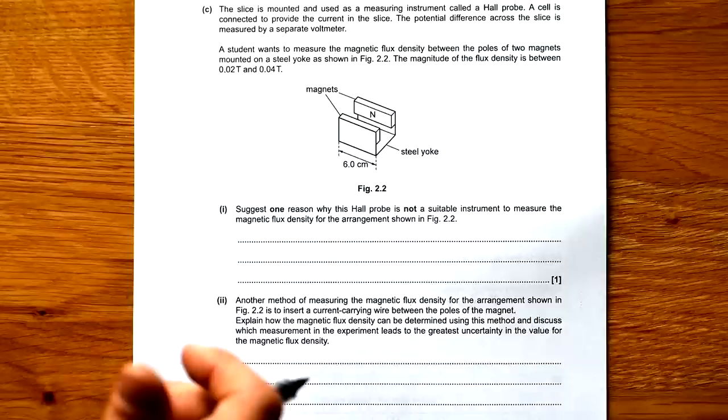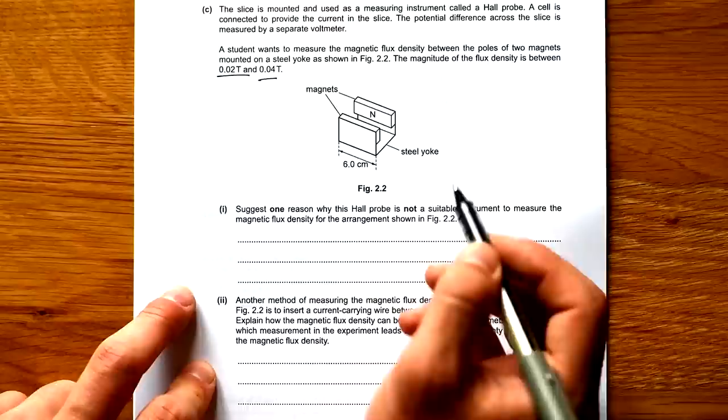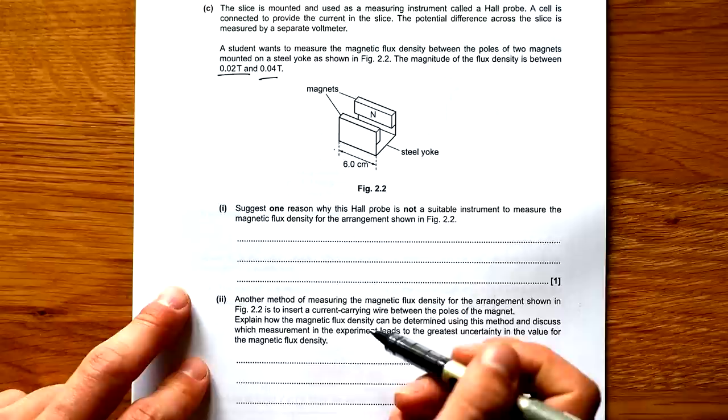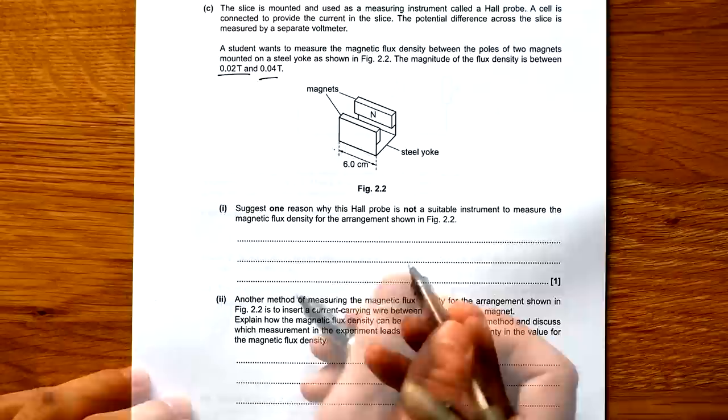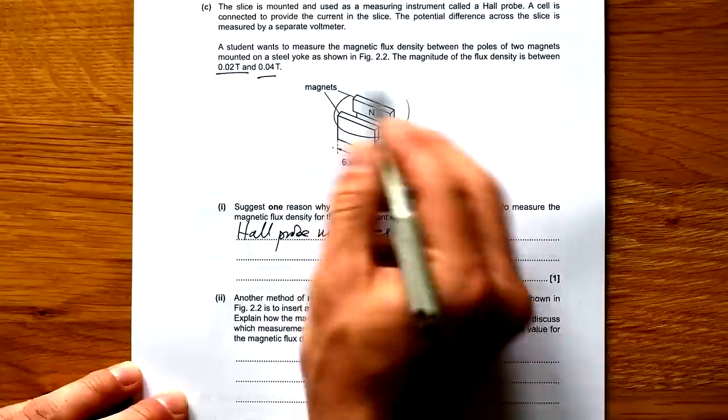Part C: The slice is mounted and used as a measuring instrument called a Hall Probe. Cell is connected to provide a current in the slice. PD across the slice is measured by a separate voltmeter. Student wants to measure the magnetic flux density between the positive two magnet mounted on a steel yoke. Magnitude of flux density is between 0.2 and 0.4 tesla. Suggest one reason why this Hall Probe is not a suitable instrument to measure the magnetic flux density for the arrangement shown. So a bit of a tricky question. But the point is that the Hall Probe only measures PD. And so it's not easy to convert that back into a flux density for what's going on here.